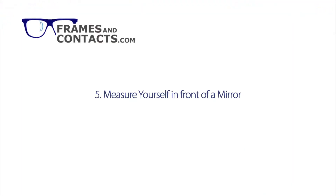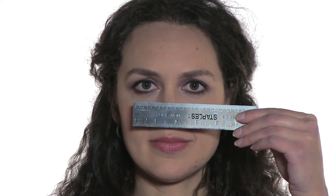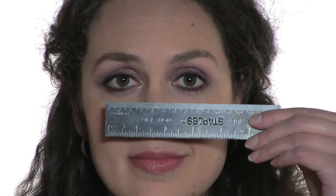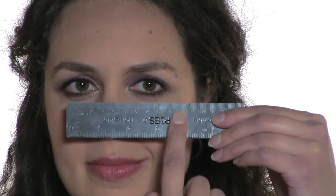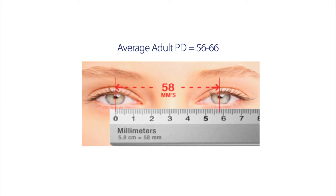Number five, measure yourself in front of a mirror with an MM ruler. Stand with your face about 20 centimeters or eight inches from the mirror. Place the ruler against your nose underneath your eyes, align it horizontally with the millimeter scale pointing up, and while looking over the top of the ruler, align the zero mark in the center of your left pupil. Read the millimeter measurement corresponding to the center of your right pupil. Repeat the procedure several times for a consistent measurement. Note that most adults' PDs are between 56 and 66 millimeters, and most kids' PDs are between 44 and 55 millimeters.